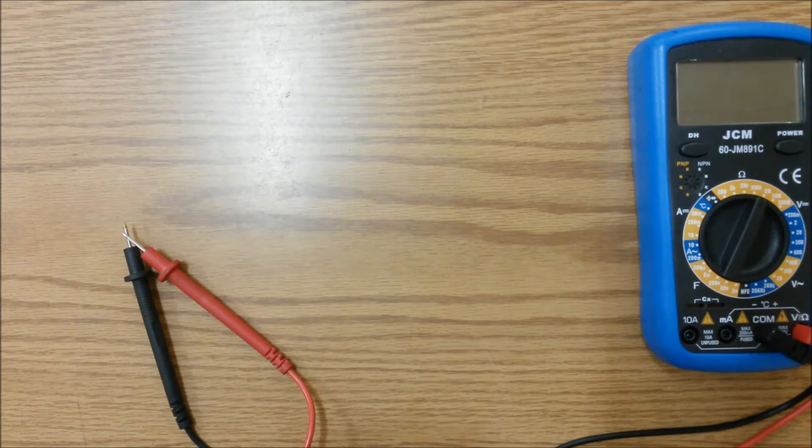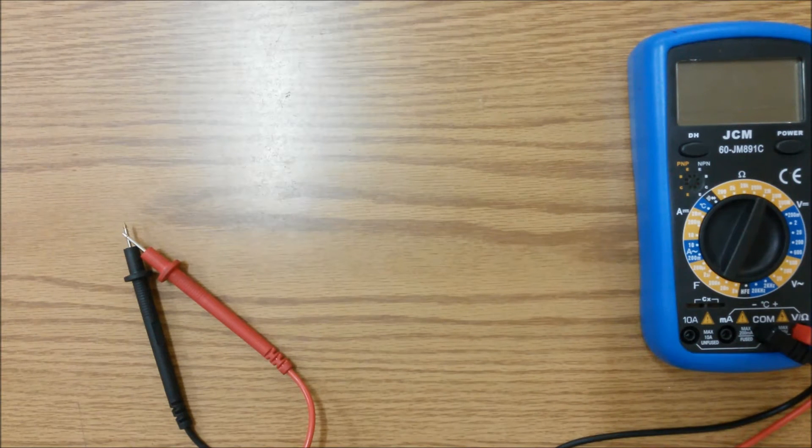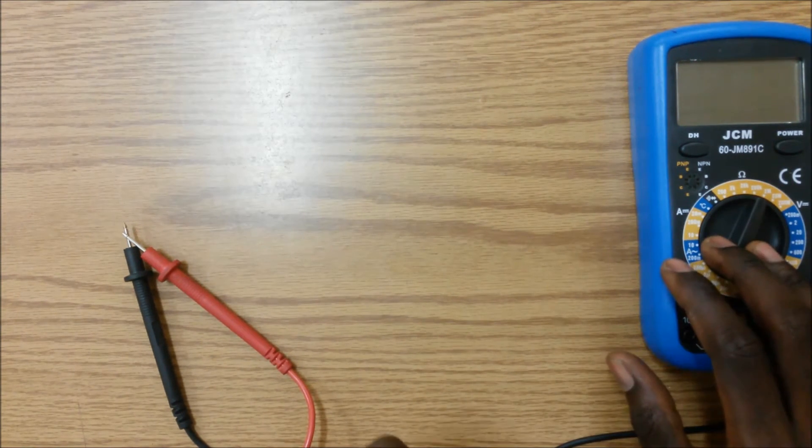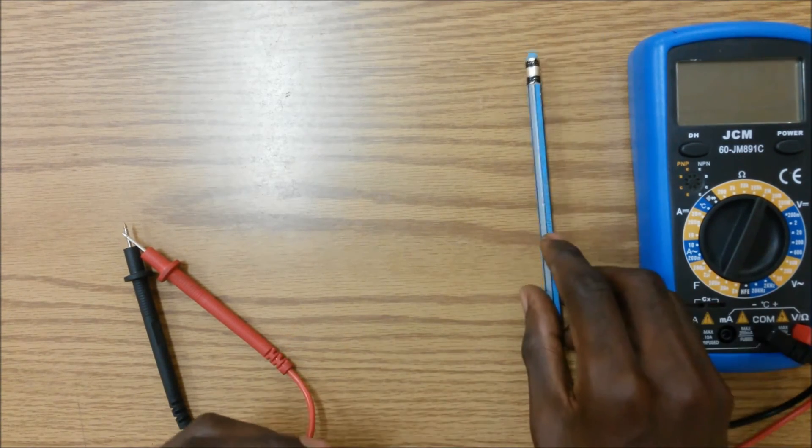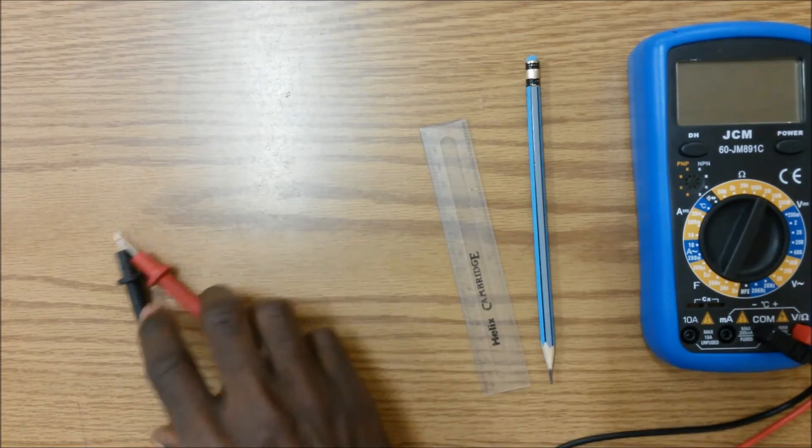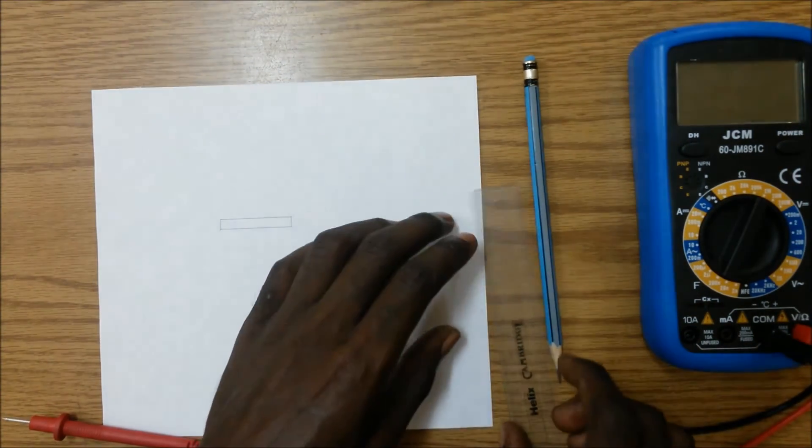So the items which we'll be using today are a multimeter, pencil, a ruler and a sheet of paper like this. So the first thing you're going to do is take your pencil and draw a four centimeters in length by a half centimeter in width box like this.